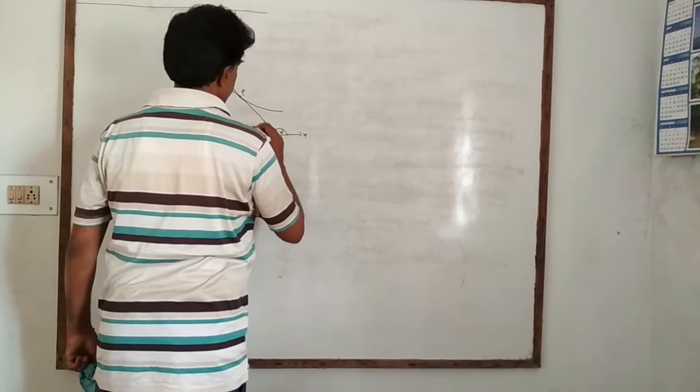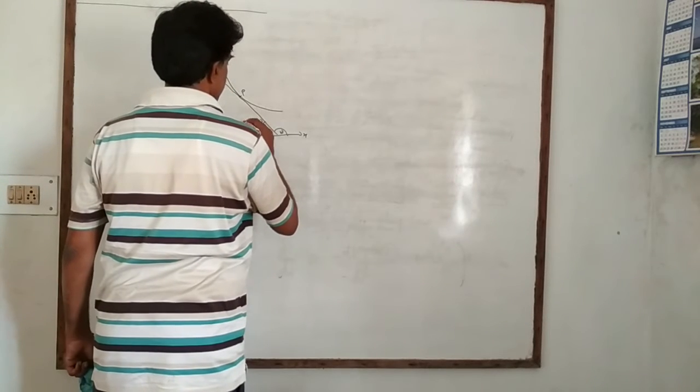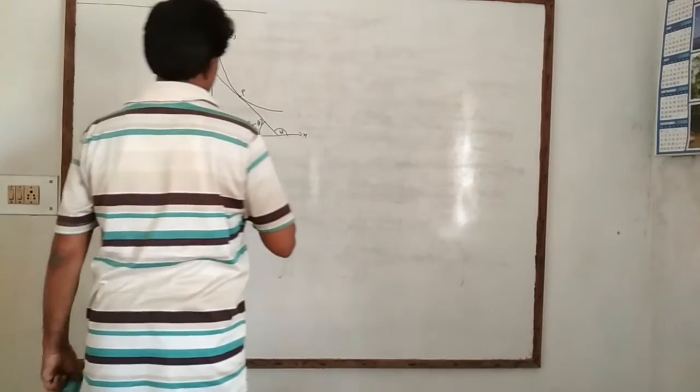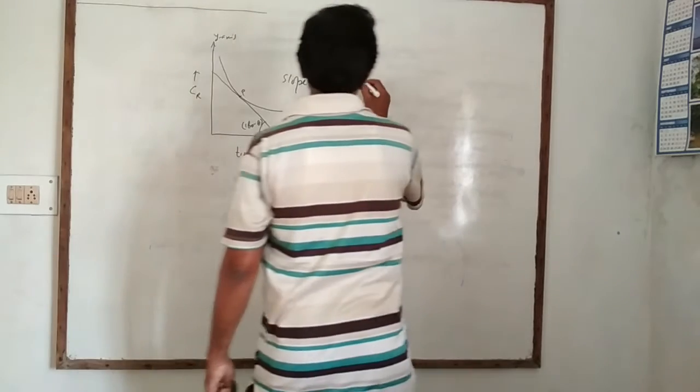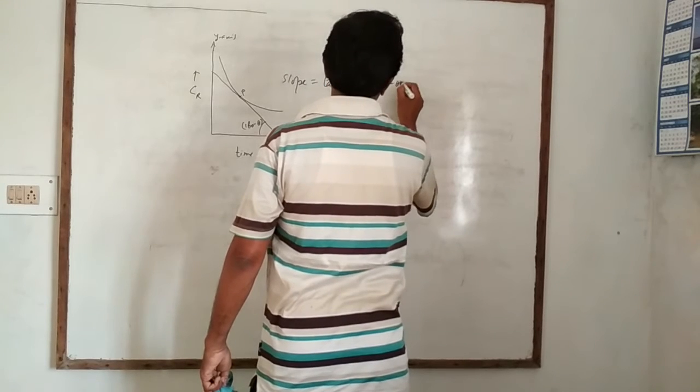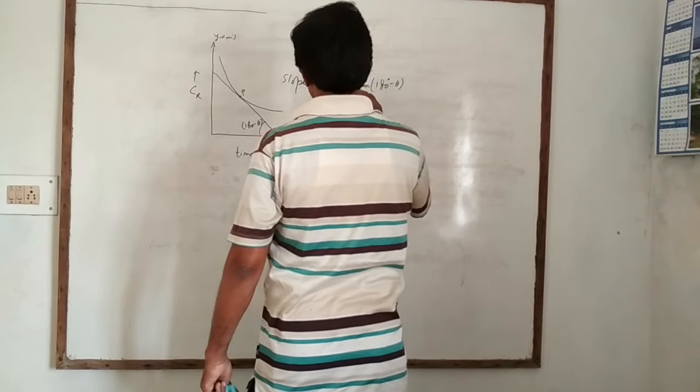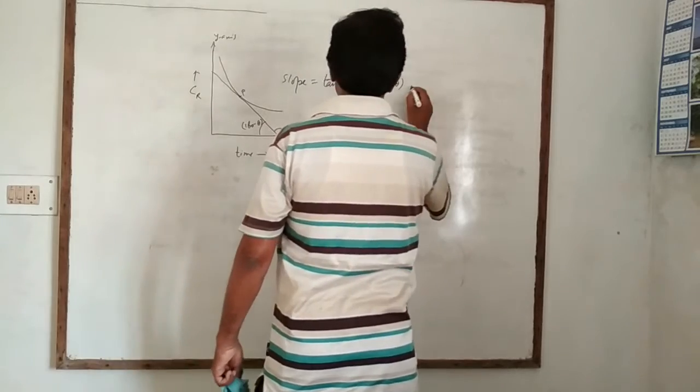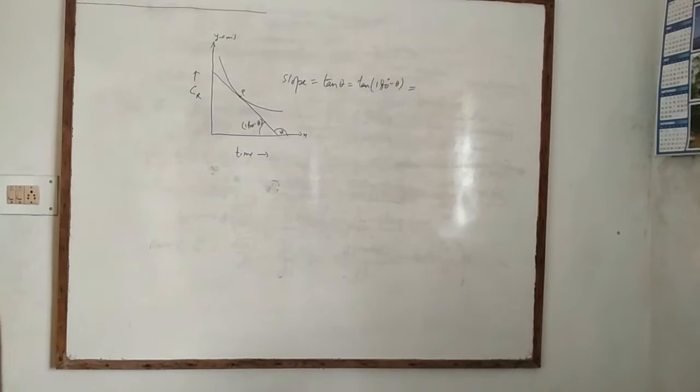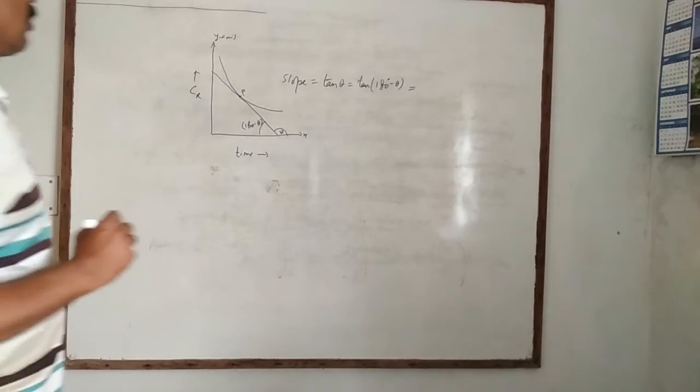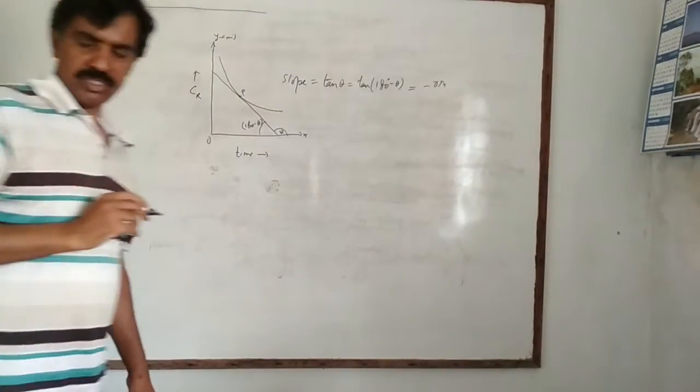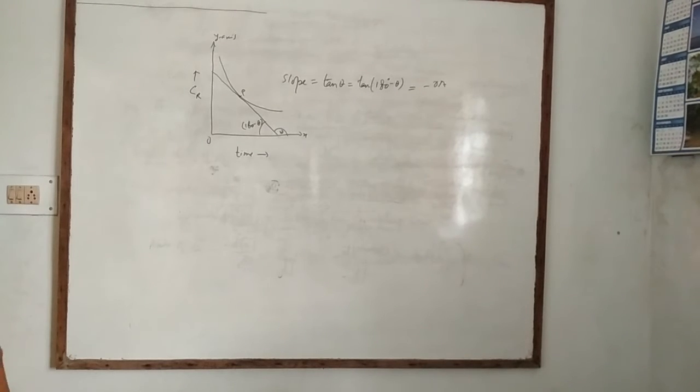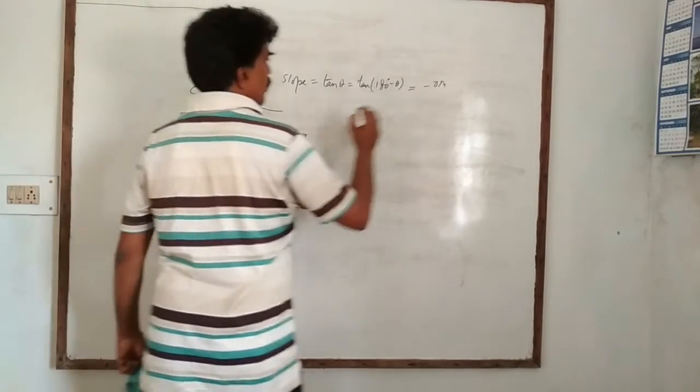This is angle theta. This angle will be 180 degree minus theta. So, tan of angle theta, slope is equal to tan of angle theta is equal to tan 180 degree minus theta. And this will be equal to minus OA by OB. Minus OA, this is O, and this is OA by OB.